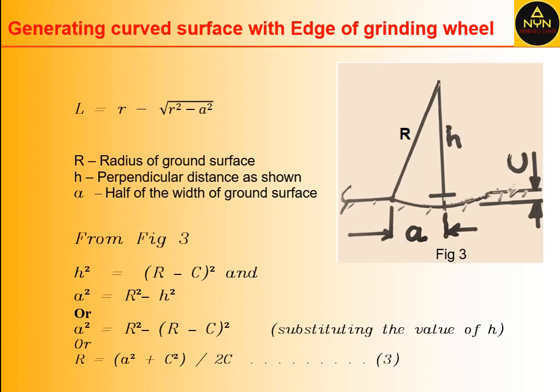To perform this operation, cup-shaped wheels can be used instead of cylindrical grinding wheels—this is more suitable to avoid operational errors. This method can be used to generate curved surfaces on flat workpieces and curved surface grinding of cylindrical workpieces by rotating the workpiece on its axis.